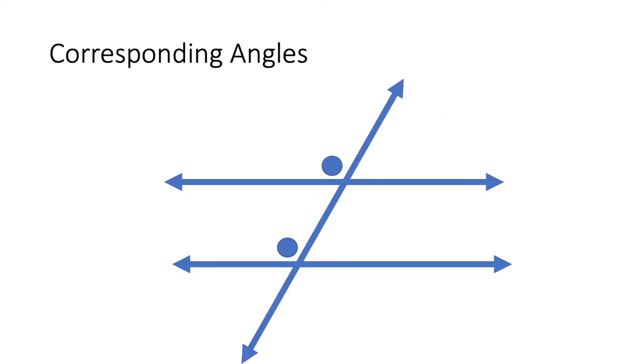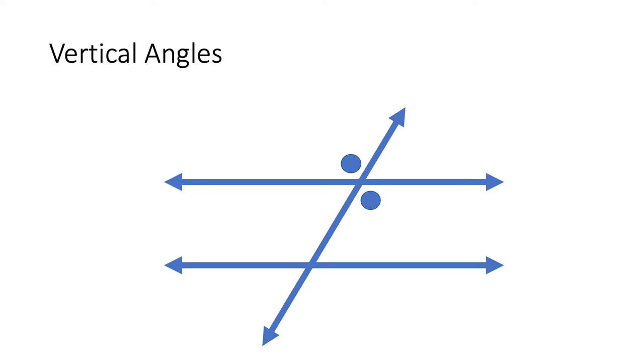Corresponding angles occur which has the same relative position at each intersection when there's a straight line crossing two others, where the transversal is. If they will be on the same part of the transversal, you can see how they would match here. Now, vertical angles are opposite angles made by two intersecting lines.